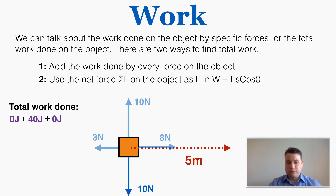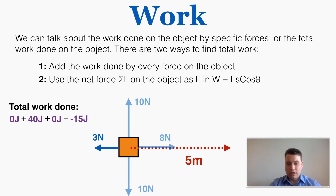The 3 Newton force is pointing in the opposite direction of the displacement, so the work is negative: negative 3 times 5 equals negative 15 joules. The total work done on this object over those 5 meters is 25 joules — if I add up the work done by each individual force, they add together to make 25.